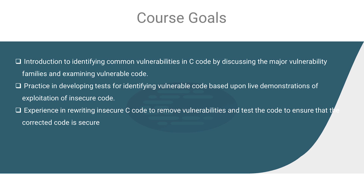In this course, we have three main goals. We want to provide an introduction to identifying some of the most common types of vulnerabilities in C code. We're going to do this by discussing the major vulnerability families and looking at C programs that contain examples of these vulnerabilities. After that, we're going to practice developing tests for identifying vulnerable code, and we'll learn how to do this by actually exploiting these vulnerable programs — because knowing how to determine if your code is breakable by breaking it yourself is very useful for creating test cases.